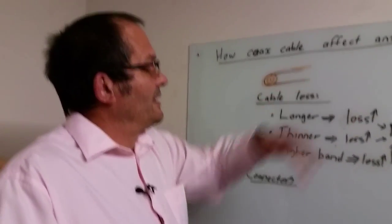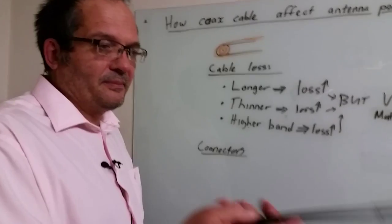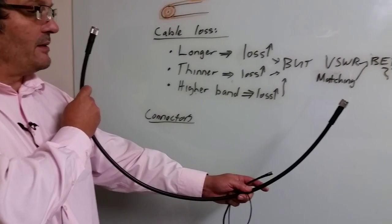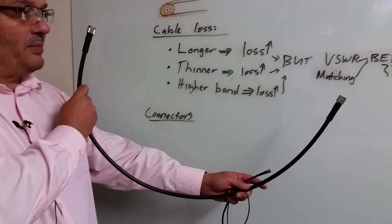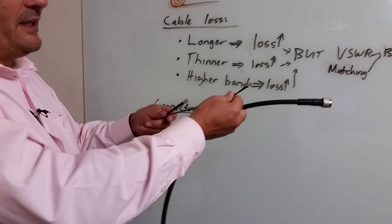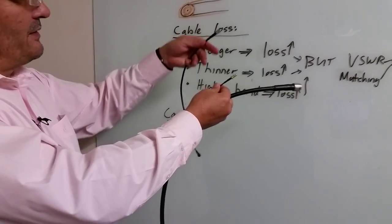How does coaxial cable affect antenna performance? The first thing to show you is this coaxial cable that links the antenna to the radio. If the antenna's outside, it could be 10 meters, 5 meters, whatever length. You get different ones - these are much thinner ones, you can see different thicknesses.